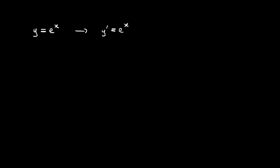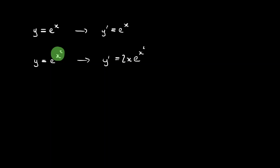We're interested in differentiating slightly more complicated functions, for example y equals e to the x squared. In other words, we want to differentiate when we've got a function as the power of e. The way we do this is: the basic function remains unchanged, so we've still got e to the power of x squared, but then we take that power — in this case x squared — differentiate it to give us 2x, and multiply through.